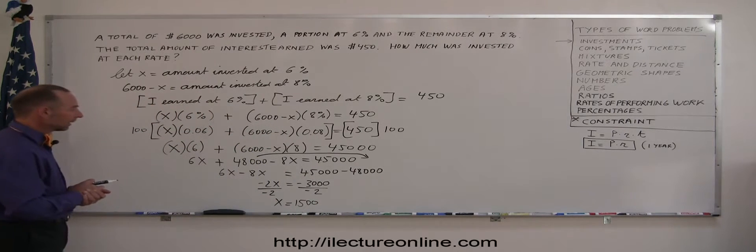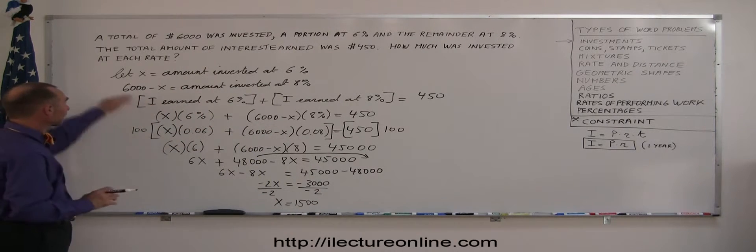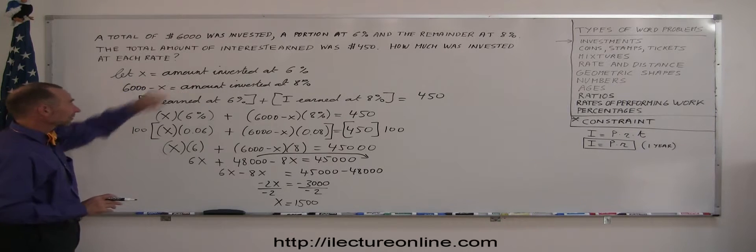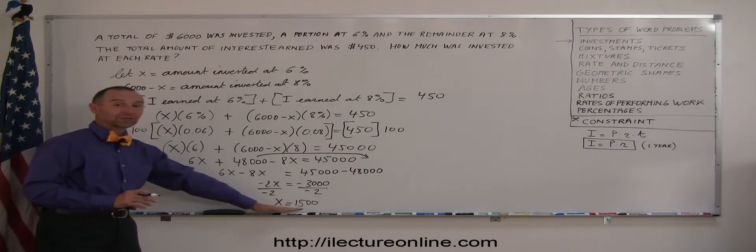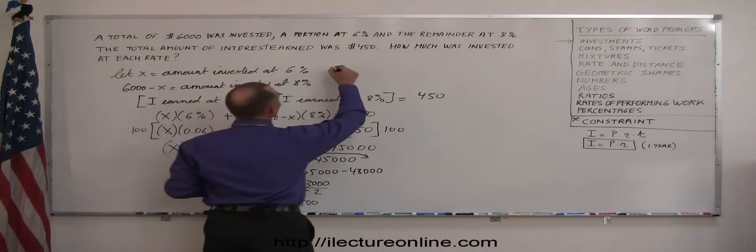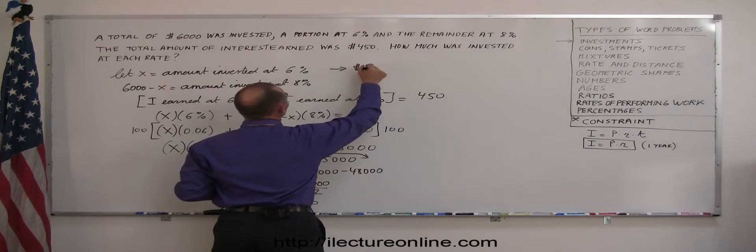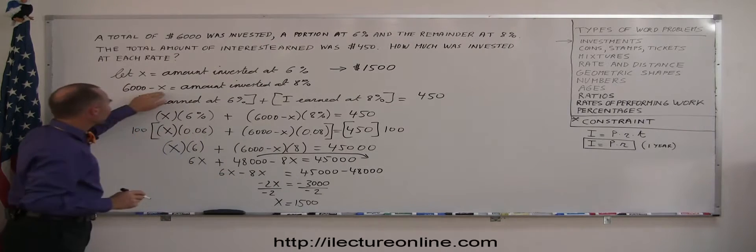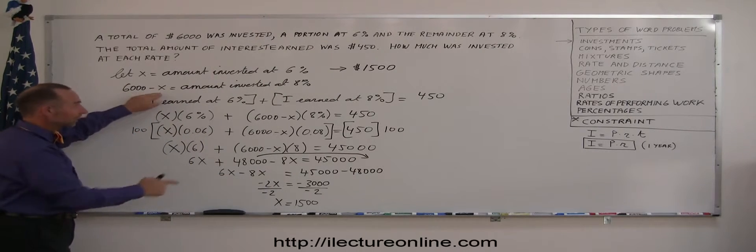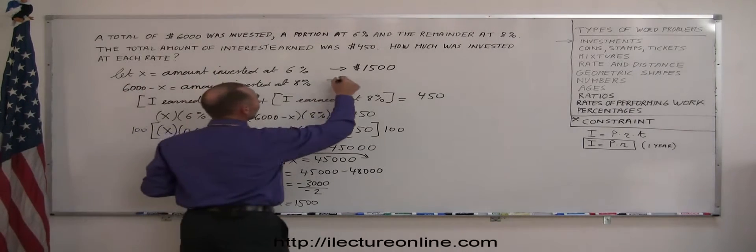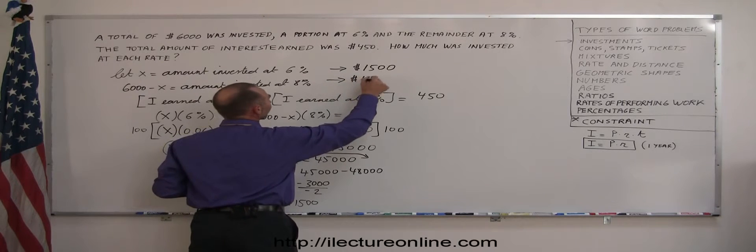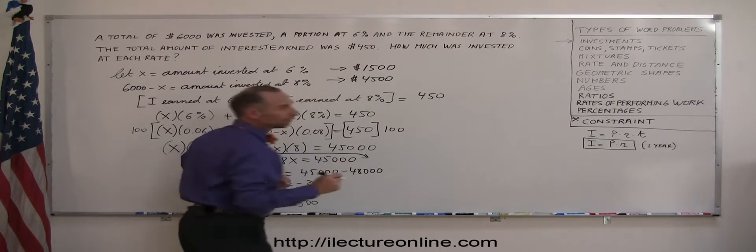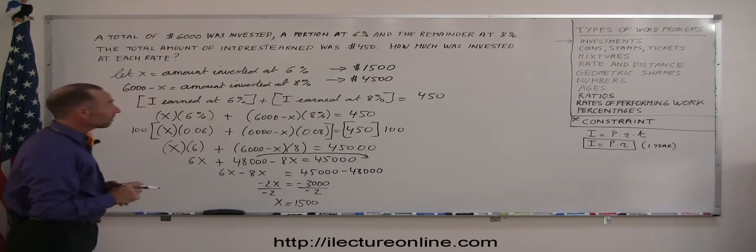All right, if that's correct, I can come back up here and say, okay, if X is the amount invested at 6%, that means I invested $1,500 at 6%, and 6,000 minus X, that's 6,000 minus 1,500, that gives me 4,500. So 4,500 at 8%. And now just to make sure we didn't make any mistakes,